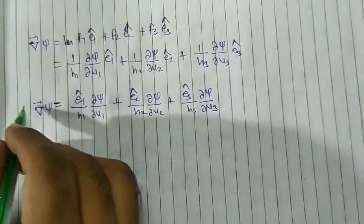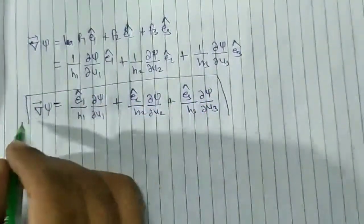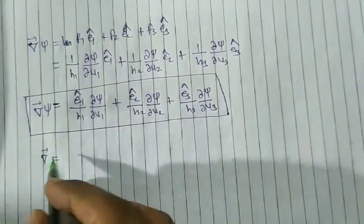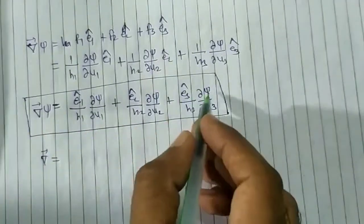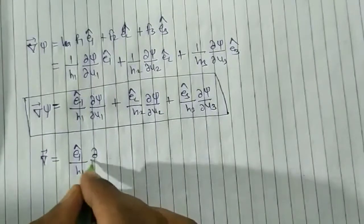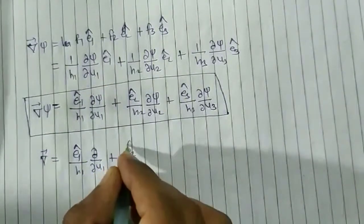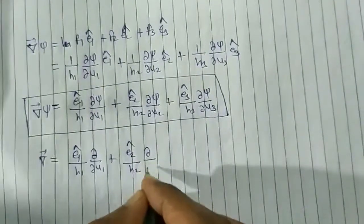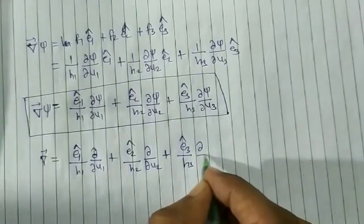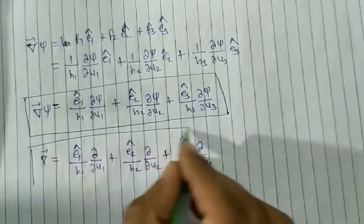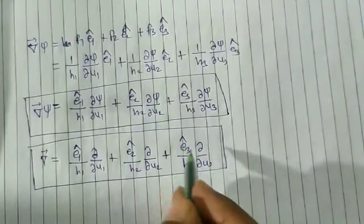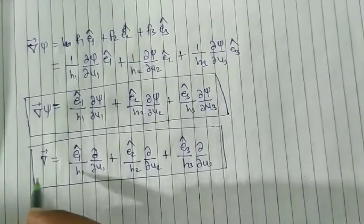Using this expression, I want to find the del operator ∇. In order to find ∇, you just remove ψ. So the remaining expression is: ∇ = (ê1/h1)·∂/∂u1 + (ê2/h2)·∂/∂u2 + (ê3/h3)·∂/∂u3. This is the expression for the del operator. It is a vector — containing three directions ê1, ê2, and ê3.